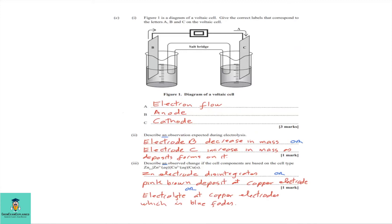2C: Figure one is a diagram of a voltaic cell. Give the correct labels for letters A, B, and C. A represents the flow of electrons. B is the anode, where oxidation occurs — electrons flow from the anode to the cathode. C is the cathode. So: A = electron flow, B = anode, C = cathode.